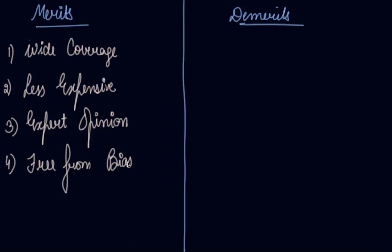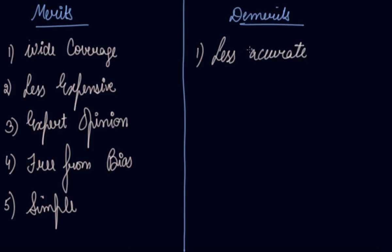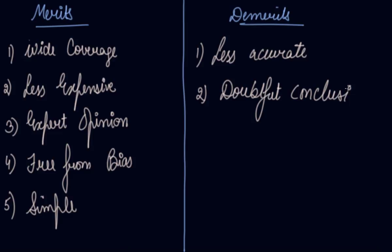Fifth is simple — this method is very simple for collecting data from primary sources. Now, what are the demerits? First is less accurate — because somebody else is giving the information on behalf of the informant, it can be less accurate. Second is doubtful conclusions — the conclusions drawn might be doubtful because there might be some flaws in the information collected from the witnesses.